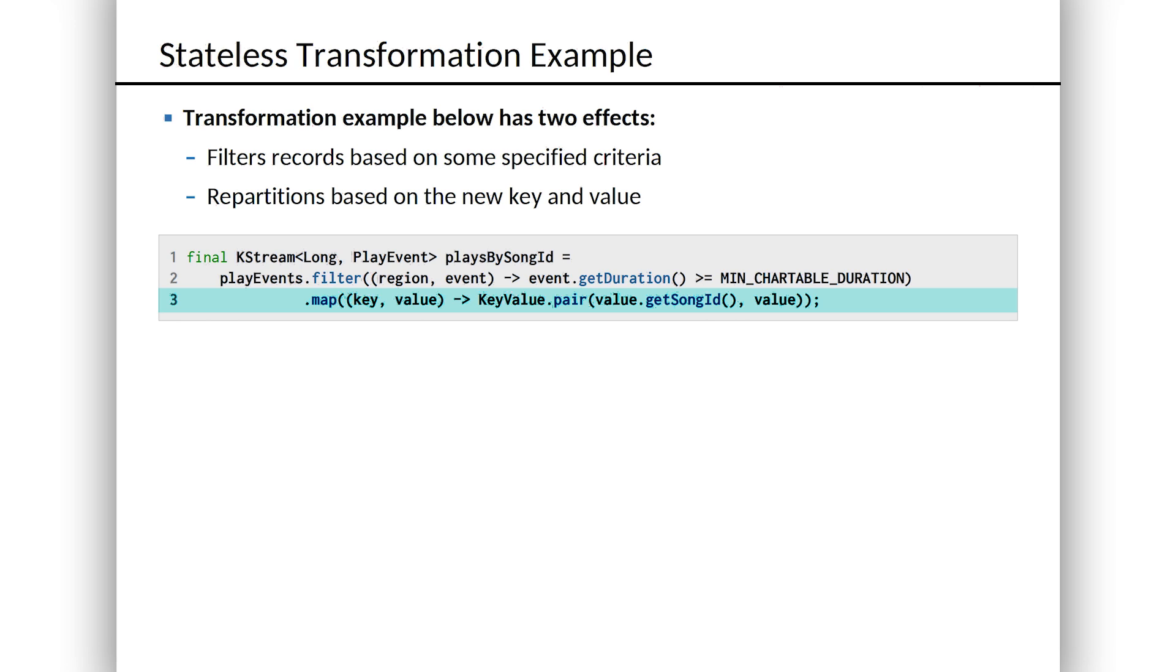We just want the key to be the ID of the song that's being played and not that rather more cumbersome region code. I'm not even sure where that came from. Seemed like a good idea at the time, but it's easy to fix. Of course, if somebody else in the system needs that region code and that stream is meaningful with that partitioning in place, that stream is still there. Other people can use it. Now we've created a new stream that's partitioned in the way we need.